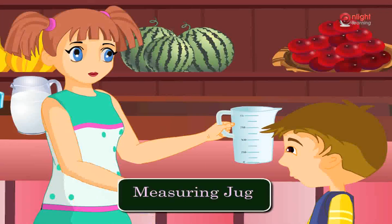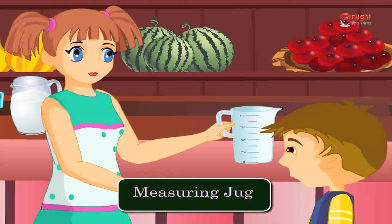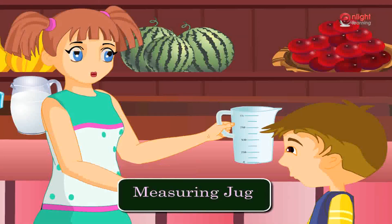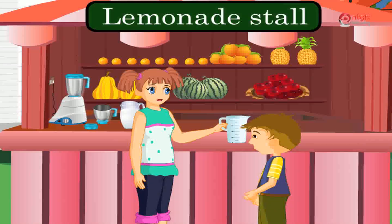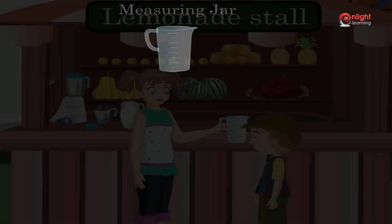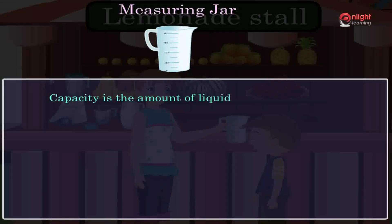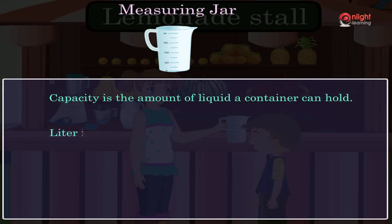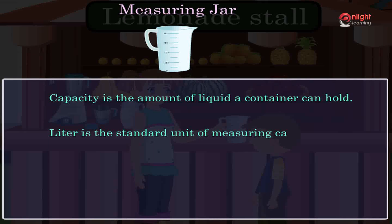This is a measuring jug. It is used to measure the capacity of objects. What is capacity, Millie? Capacity is the amount of liquid a container can hold. Liter is the standard unit of measuring capacity.